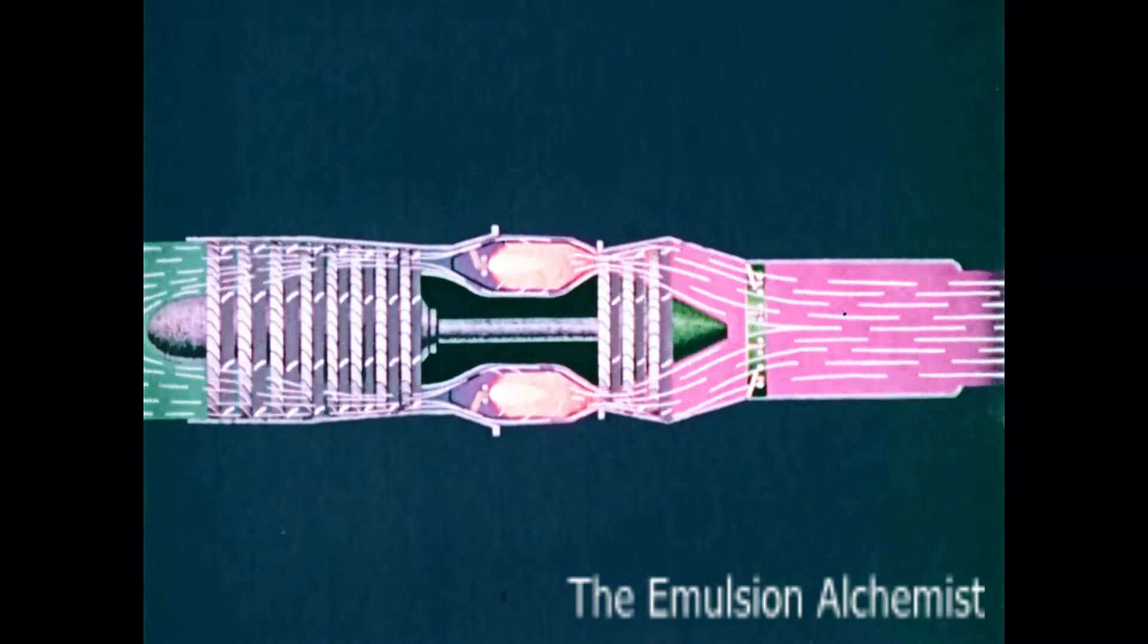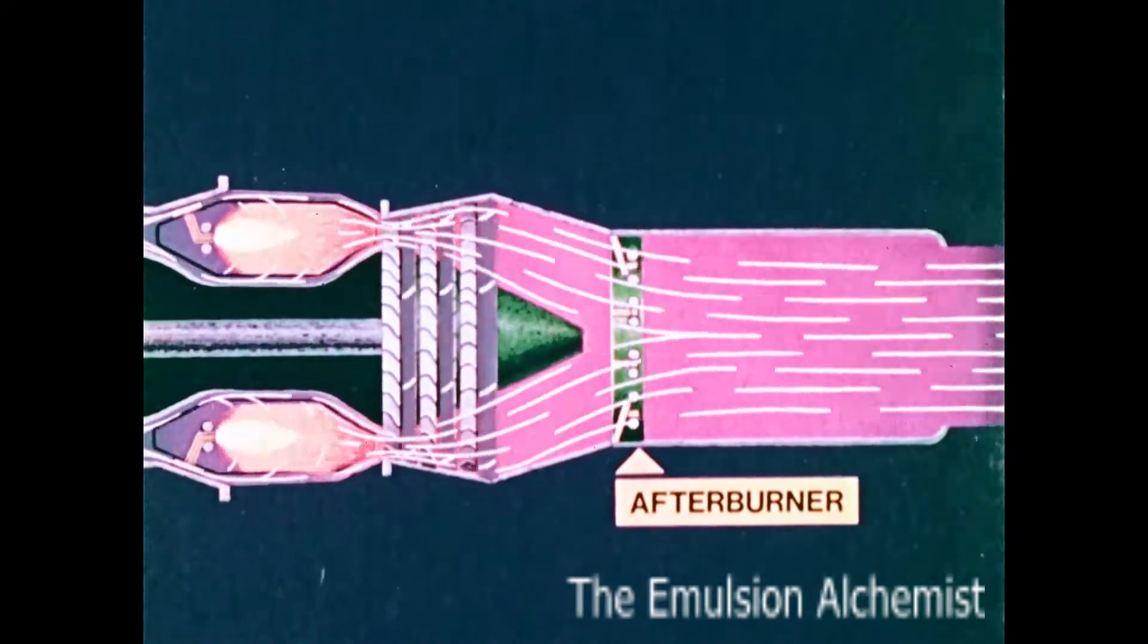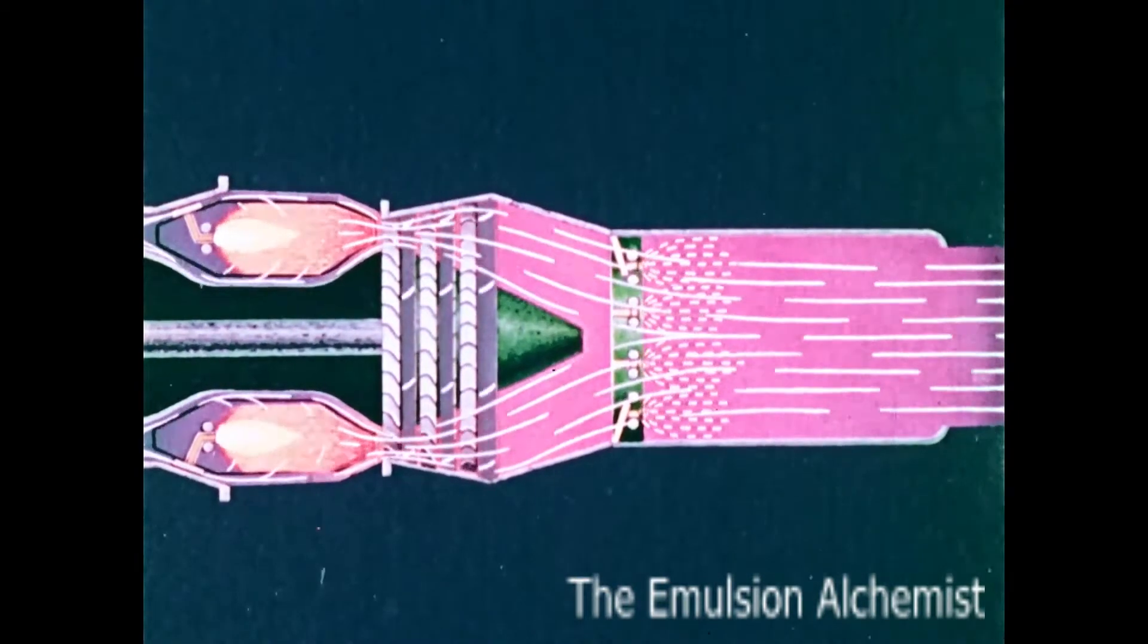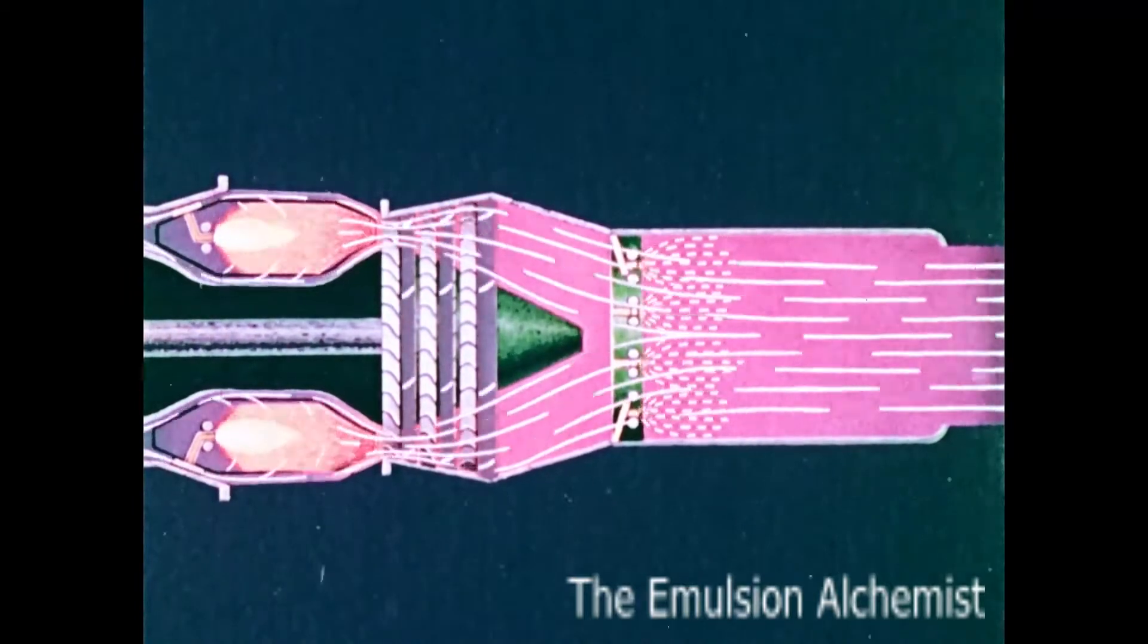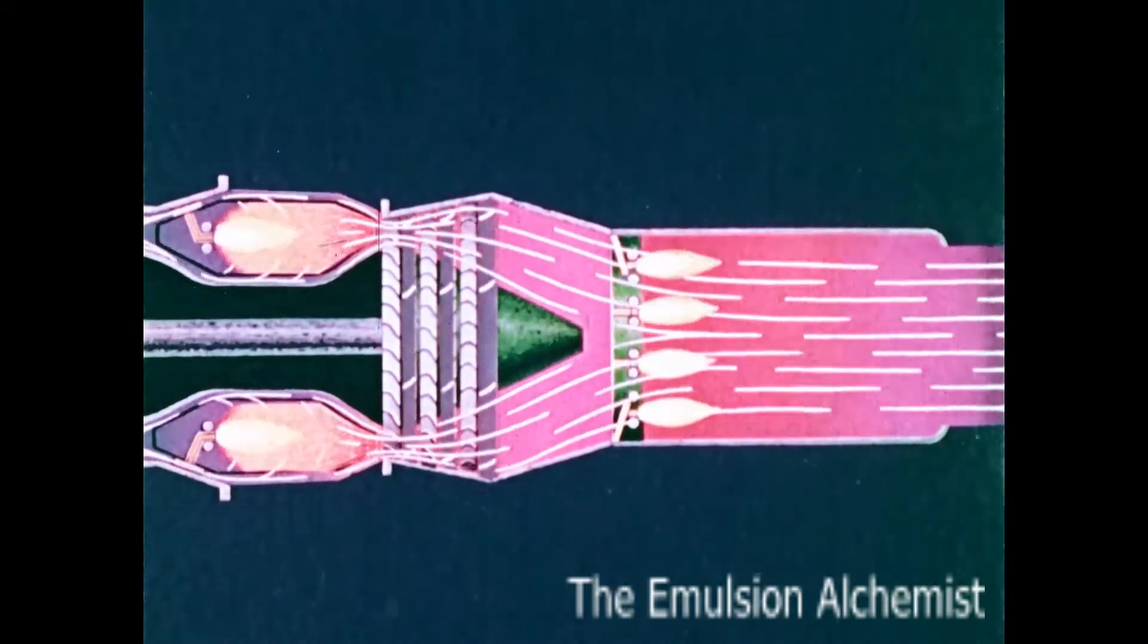Some turbojets are equipped with an afterburner that provides extra thrust for short periods. When fuel is injected, it combines with the unused oxygen in the exhaust. The extra burning increases the exhaust gas temperature and velocity, substantially increasing the energy and the thrust.